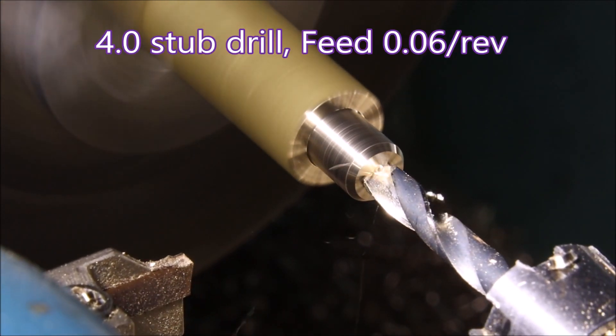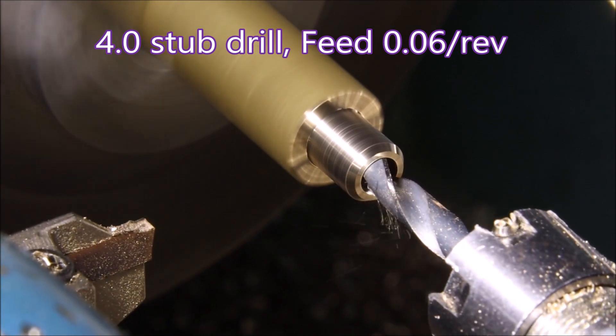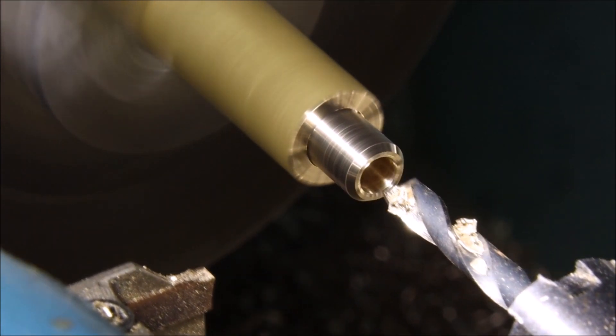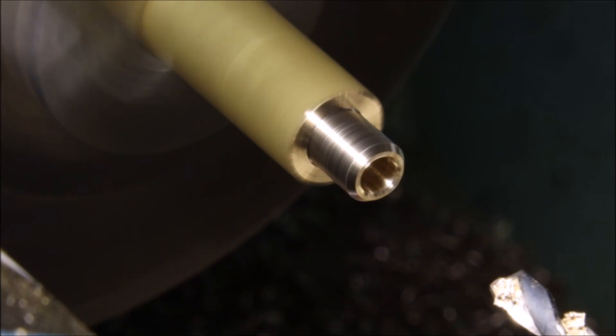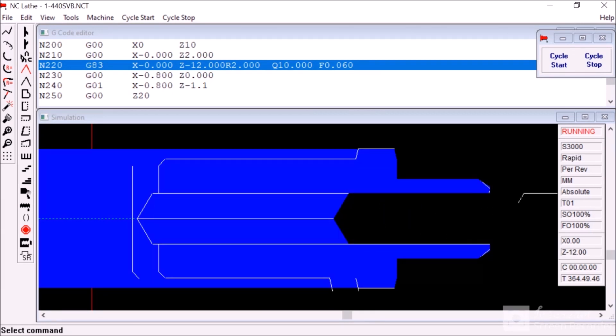This is just a standard stub drill, not a CNC stub drill, but if you're not doing too many parts they work fairly well. And here I'm using the stub drill just to break the sharp corner on the drilled hole. Here's the simulation of the stub drill doing its thing.